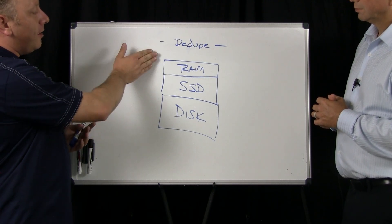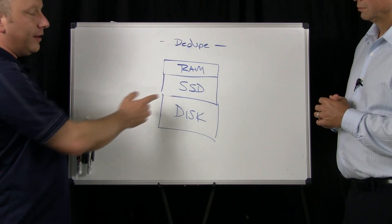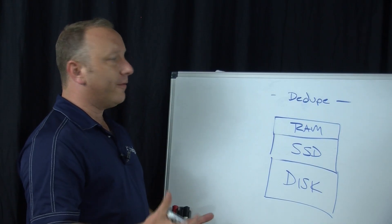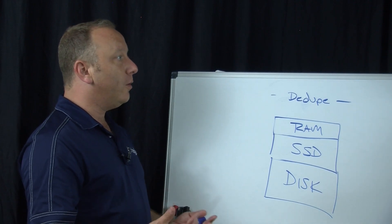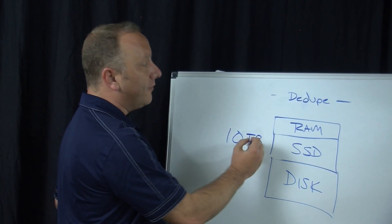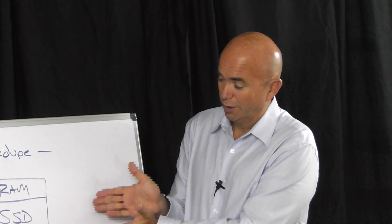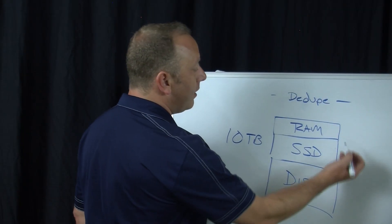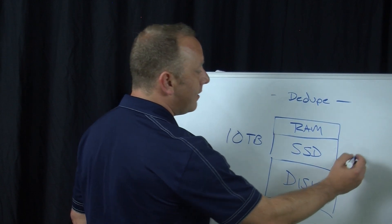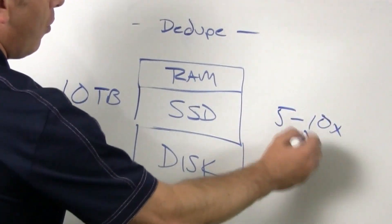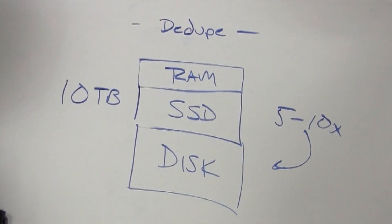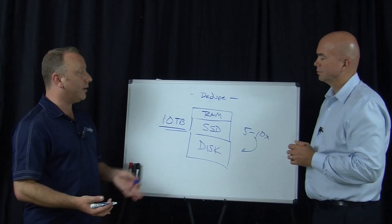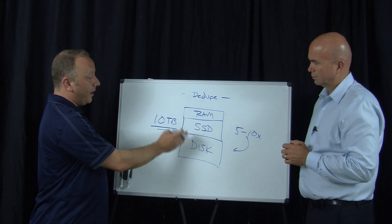We do it way up front in the data path. If I've got two terabytes of flash in the system physically and I'm getting a 5-to-1 reduction ratio — which is pretty typical for what we do — the host thinks I've got 10 terabytes of flash. Dollar values are more expensive up here, so that expansion is worth it. Flash is 5 to 10 times more expensive than disk on a dollars-per-gigabyte basis. If we can help resolve that with deduplication — and we do compression up front as well — something that raw might cost 50 cents a gig, we can get down to a dime.